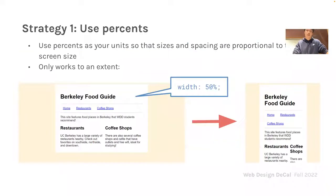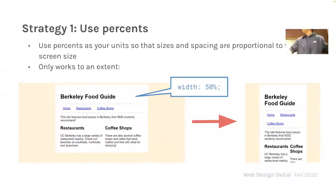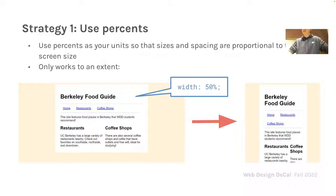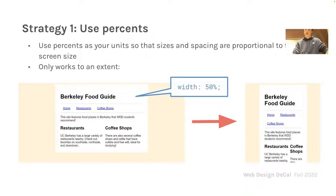If you look at the website, the margins are extremely large on the right and the left. One strategy to make your websites more responsive to multiple screens is to use a percentage, so that for any screen size the percentage will fill in the space the website is going to take up. If you look on the right, the block actually fills up 50% of the total space.